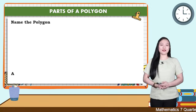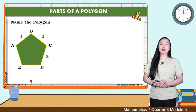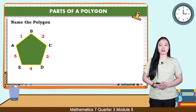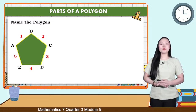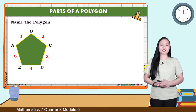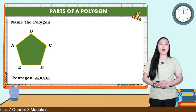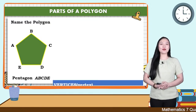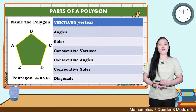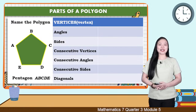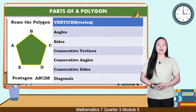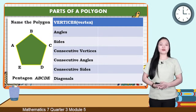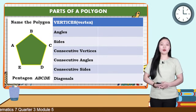Join this activity about parts of a polygon. This figure has five sides, so it's a pentagon. Since we name polygons with capital letters, this polygon is pentagon ABCDE. Let us name the following parts of the given polygon: vertices, angles, sides, consecutive vertices, consecutive angles, consecutive sides, and diagonals. Let us refer to pentagon ABCDE.